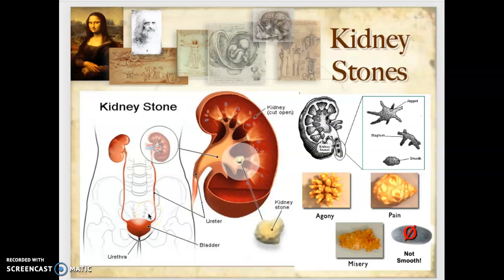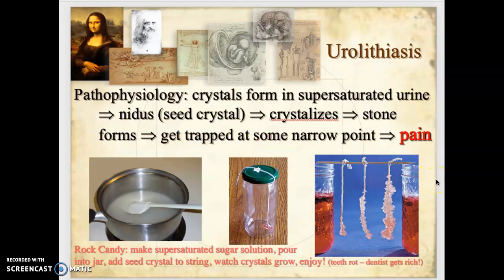To understand the pathophysiology, I'm going to use a childhood analogy. When I was a kid, we used to make rock candy — sugar crystals. To make rock candy, you put a pan of water on the stove, heat it up, and dissolve sugar until no more dissolves, creating a super-saturated sugar solution. You pour it into a jar with a string across the top, and on that string you place one sugar crystal.